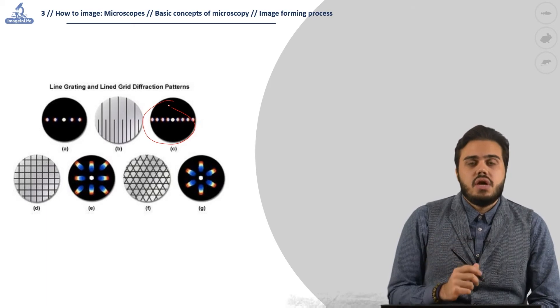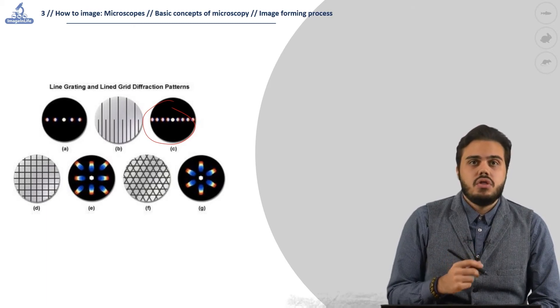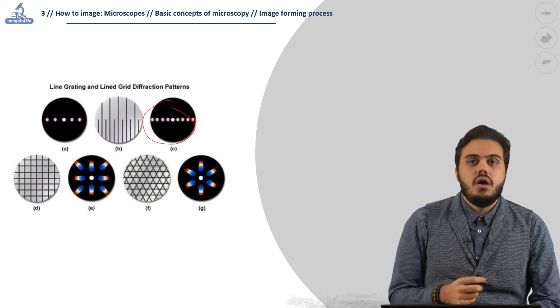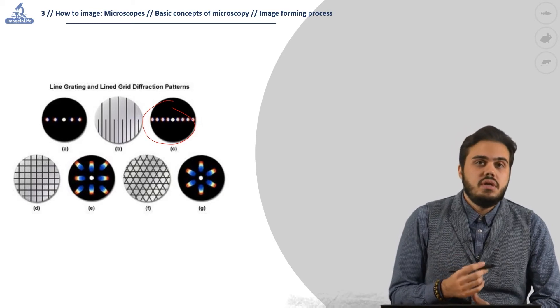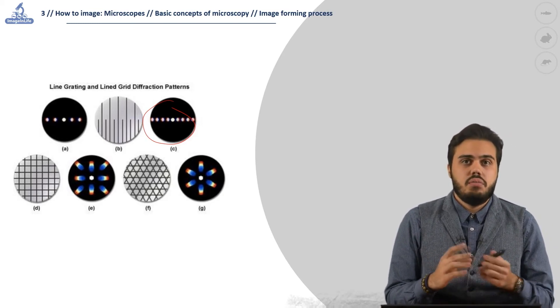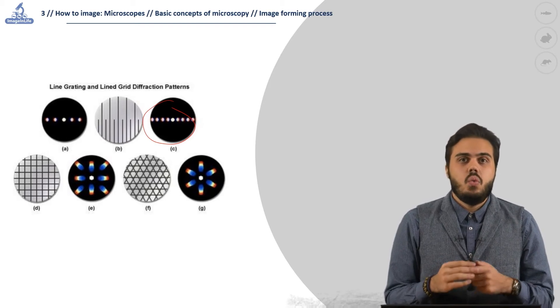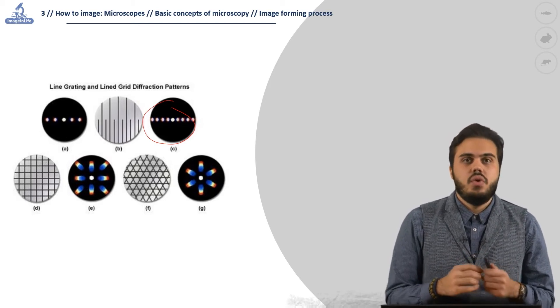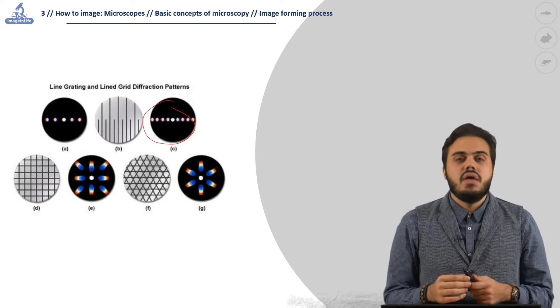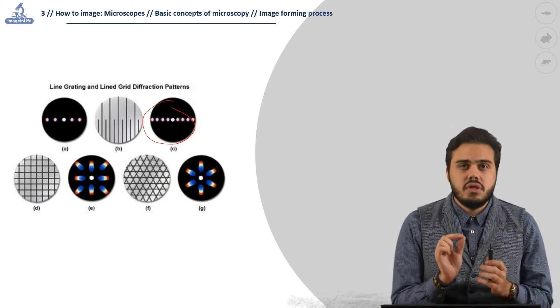Changing the structure and size of the grading changes the diffraction patterns. Considering what I just said about the nature of the specimen and the diffraction patterns, we can explain why apochromatic lenses with high numerical aperture can separate extremely small detail in blue light.